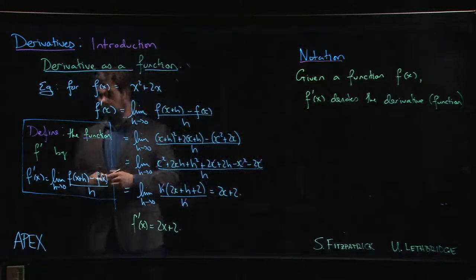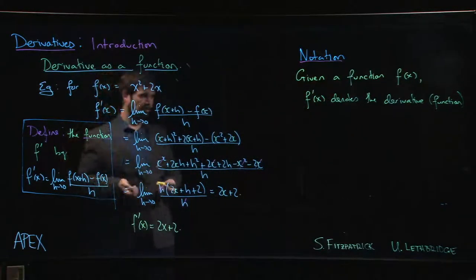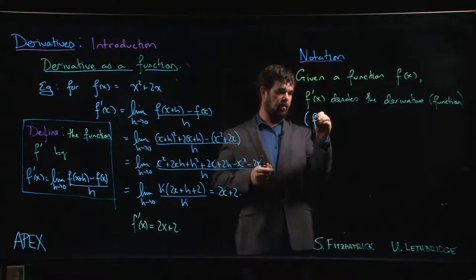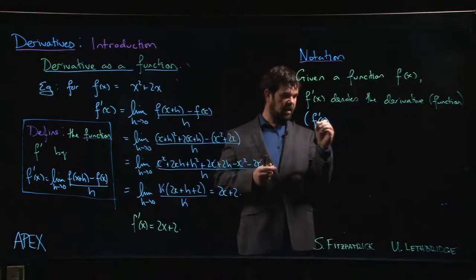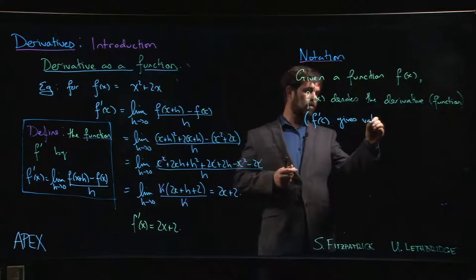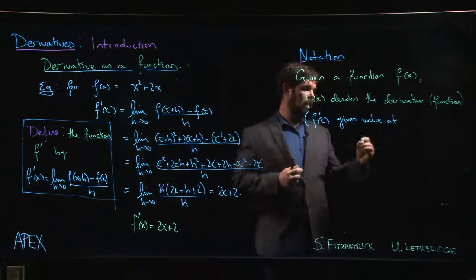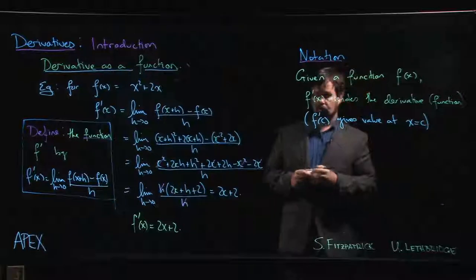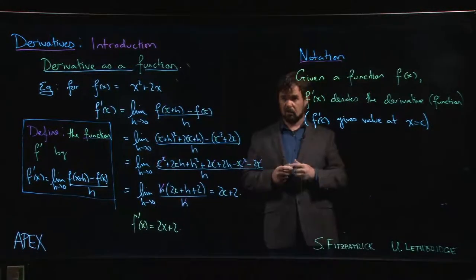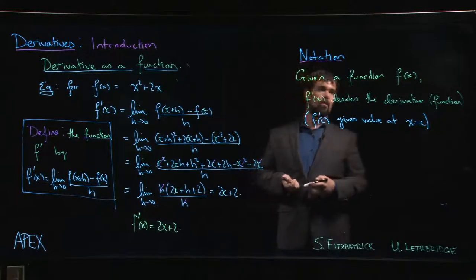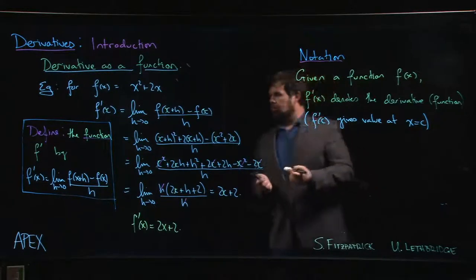When you want to talk about slopes of tangent lines, we can say that f prime of c gives the value at x equals c. So it's really nice for talking about the value of a derivative at a point, giving the slope of the tangent line. It's not so great when you want to talk about rules for derivatives or formulas for derivatives.